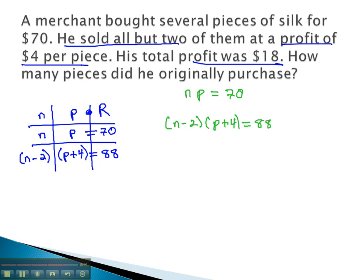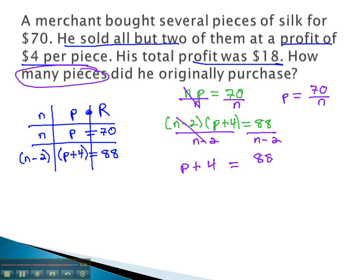Now we're ready to start solving by looking for how many pieces and dividing by that factor, the number we're looking for. This gives us price equals 70 over n, and dividing by n minus 2 gives us price plus 4 equals 88 over n minus 2.